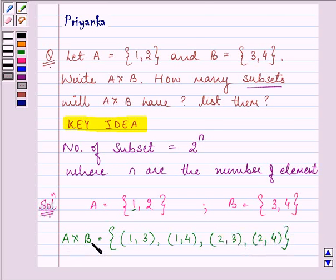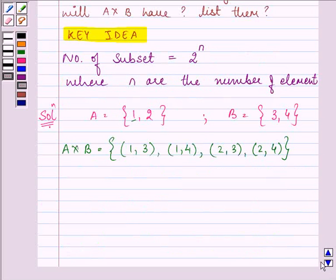So, the number of elements in A cross B is 4.